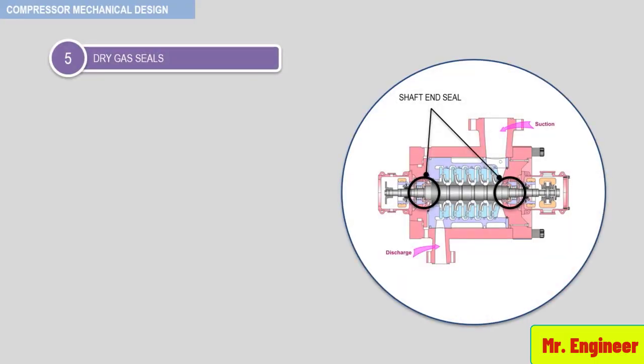The dry gas seal uses the process gas as the working fluid. As the use of other lubricants is avoided, the seals have several advantages. First, the cost and maintenance of seal oil systems is avoided.